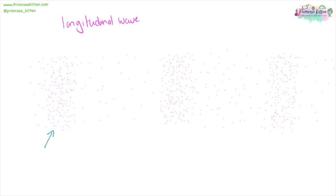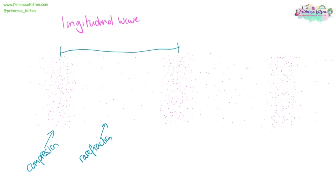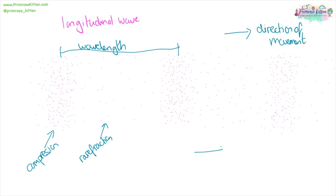Here we have our longitudinal wave, where we have areas of compression and areas of rarefaction. We can measure the wavelength in this from one point to another point. And the direction of movement is side-to-side, and so it's the direction of energy transfer as well.